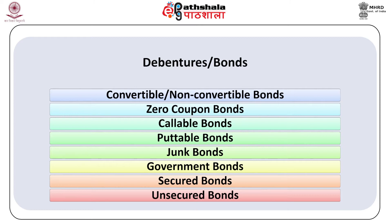Zero-coupon bonds are deep discount bonds. These bonds are redeemed at the expiry of a specified period at the face value and issued at a discounted value. No interest is payable during the lifetime of the bond. IDBI issued in 1992 a Deep Discount Bond (DDB) of face value Rs. 1 lakh, redeemable in 25 years at the issue price of Rs. 2,700. Since the face value or redemption price is far higher than the issue price, they are called deep discount bonds, and since there is no coupon, they are known as zero-coupon bonds. In case of a callable bond, the issuer has an option to retire or redeem the bonds at any time after an initial stipulated period is over.